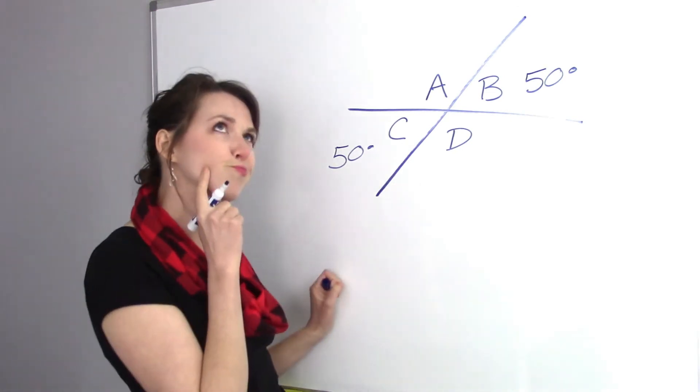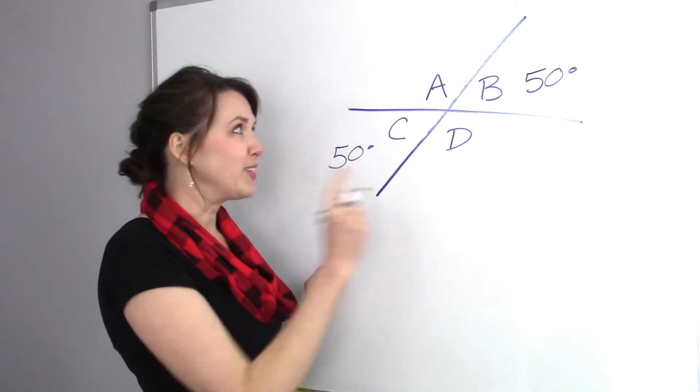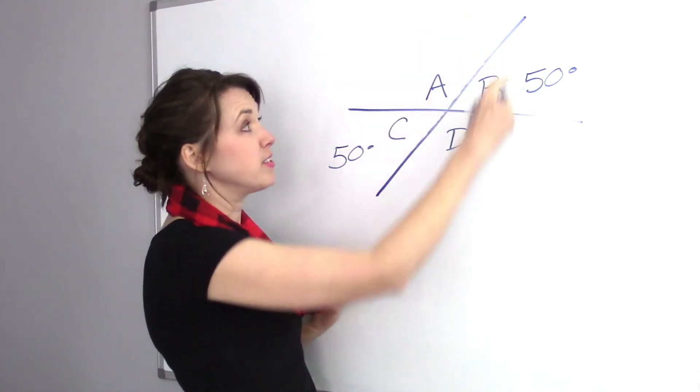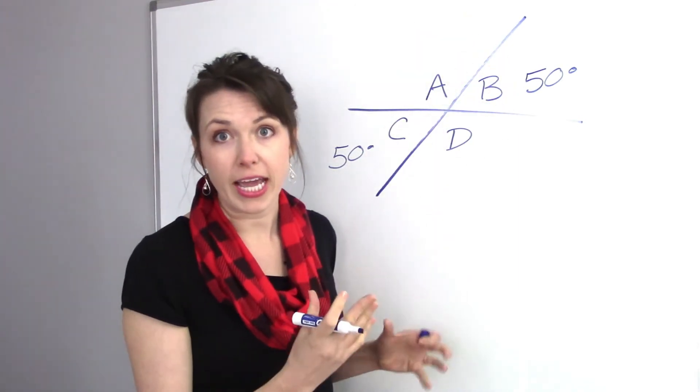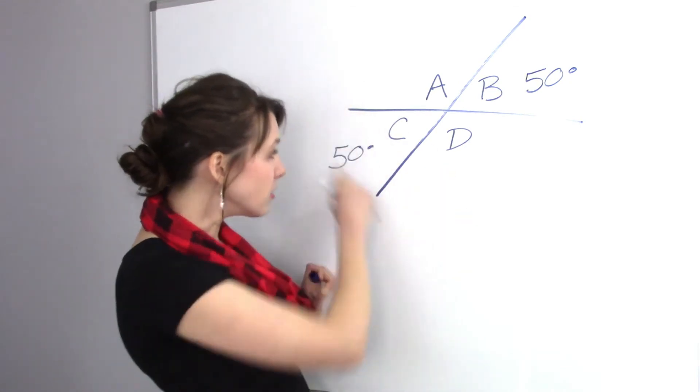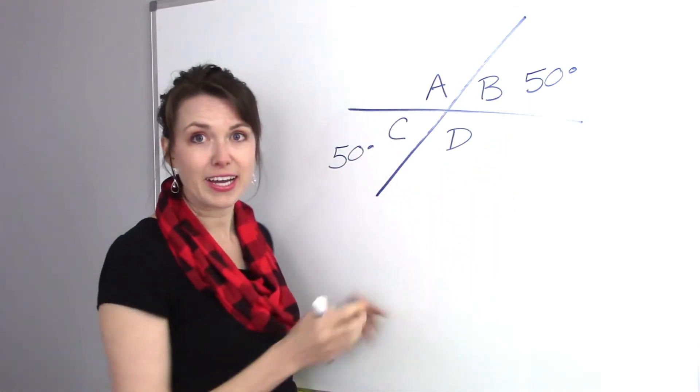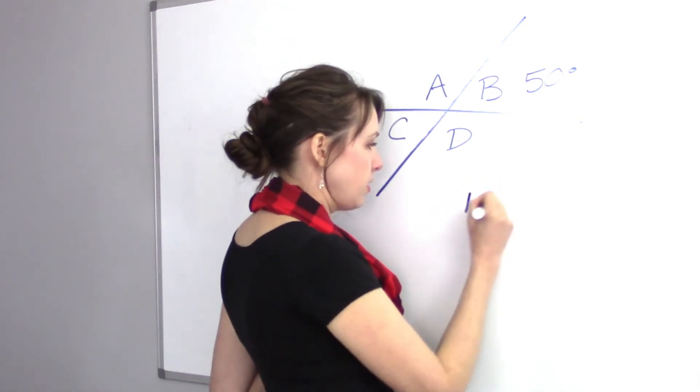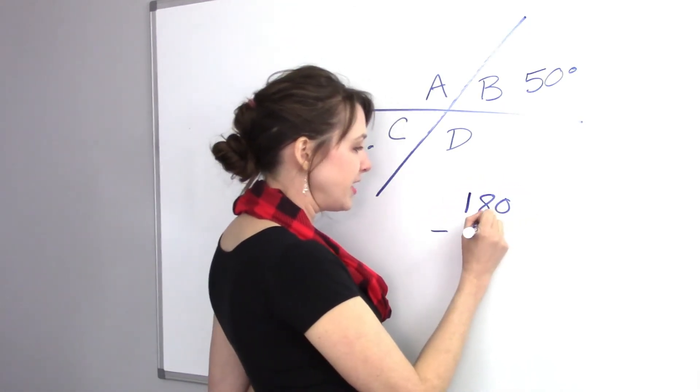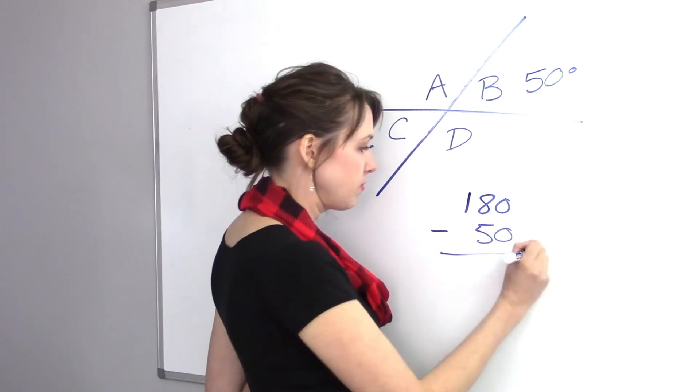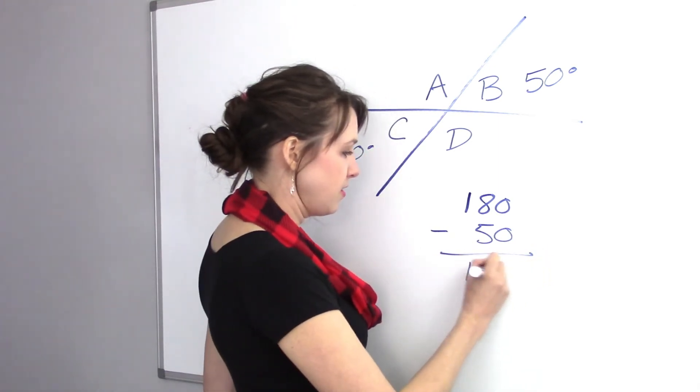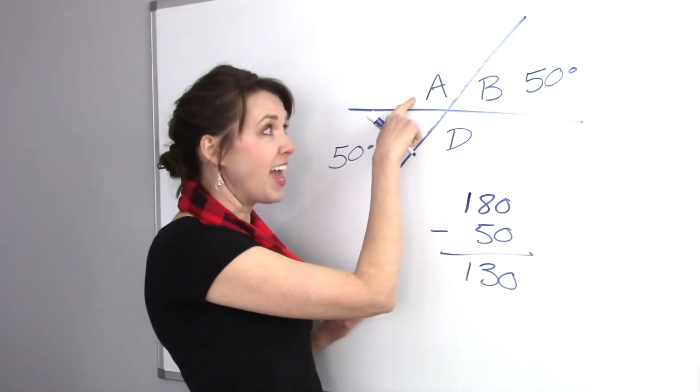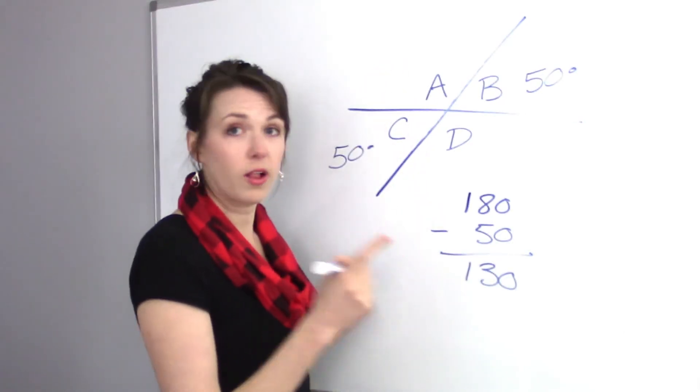Now, A and D, hmm. Well, I know that this line over here represents that A plus B equals 180, right? And C and D also equals 180. So what I can do is I can just go 180 minus 50. And what do I get? 130.